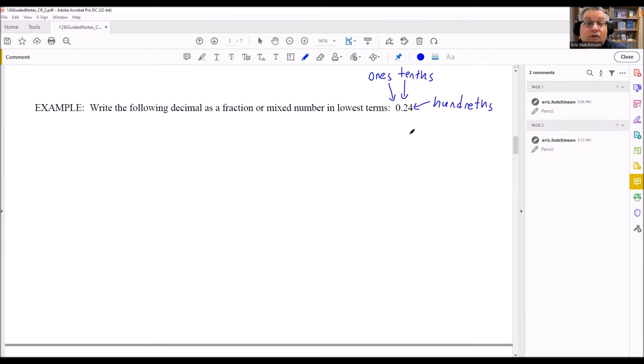So what I would say for this decimal is I would say this is going to be 24 one hundredths. So 24 one hundredths means that that's the same thing as 24 over 100. Now, if I had three decimal places, that would be thousandths. So I would have whatever that decimal is over 1000, and so forth.